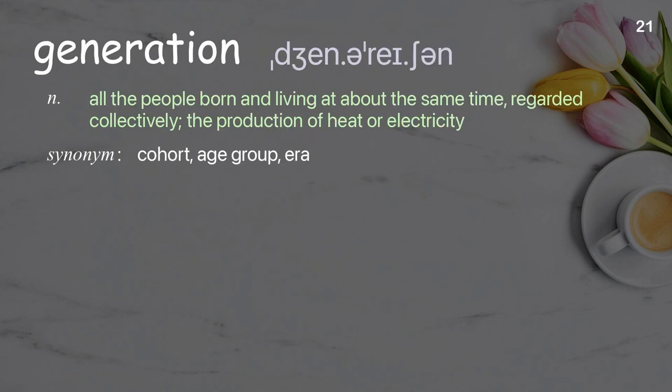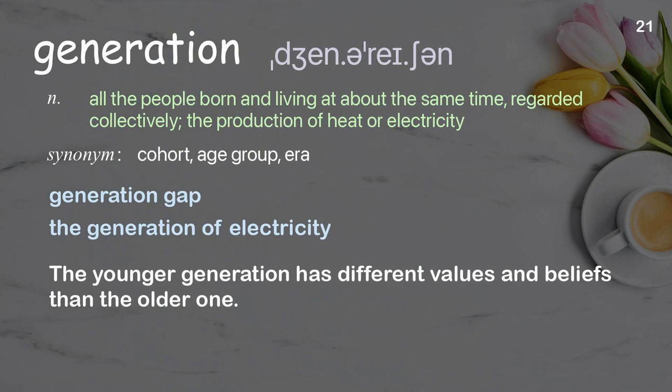Generation: all the people born and living at about the same time regarded collectively; the production of heat or electricity. Examples: generation gap, the generation of electricity. The younger generation has different values and beliefs than the older one.